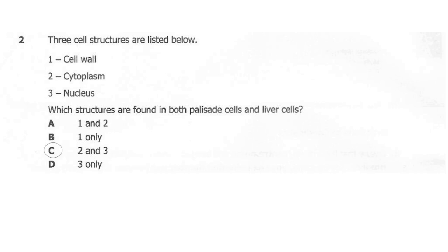The correct answer here is C: two and three. So both plant and animal cells will contain three parts, which is the cytoplasm, the nucleus, and the cell membrane. So here we're only dealing with two, which is cytoplasm and the nucleus.